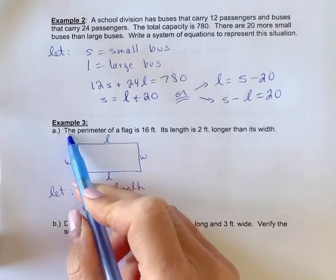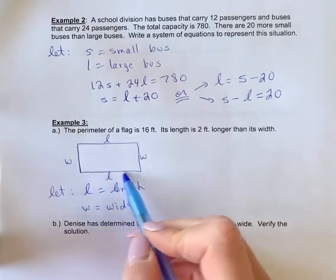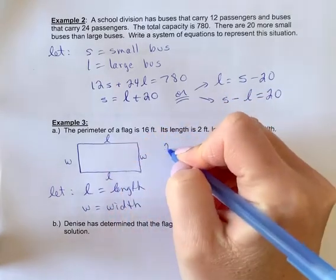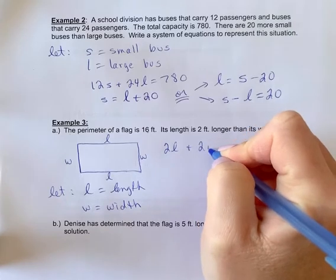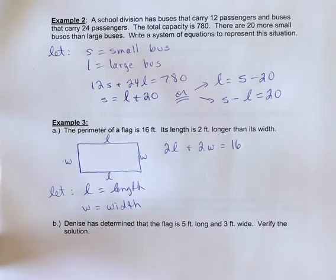Okay, let's look at the question again. Perimeter is the distance around. So we would have a length plus a width plus a length plus a width. So that would mean two lengths plus two widths would equal a distance of 16 feet. So that would be our first equation.